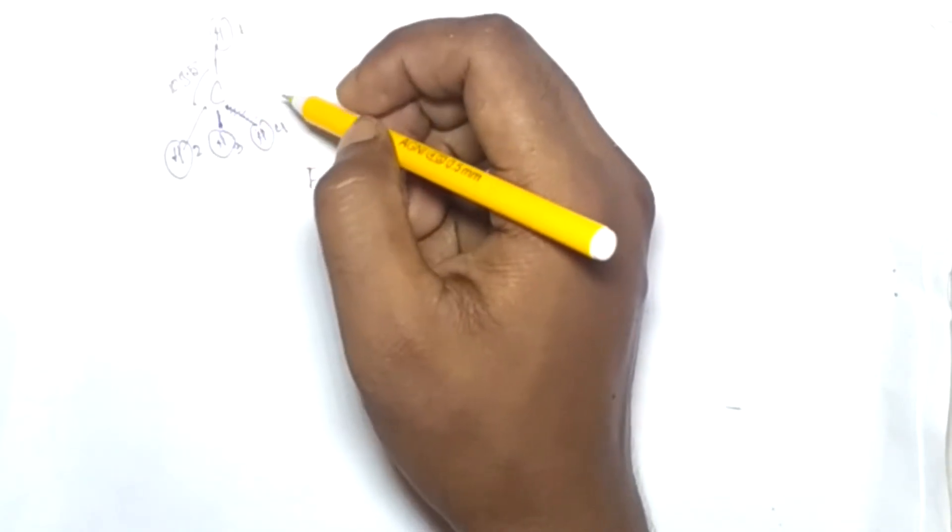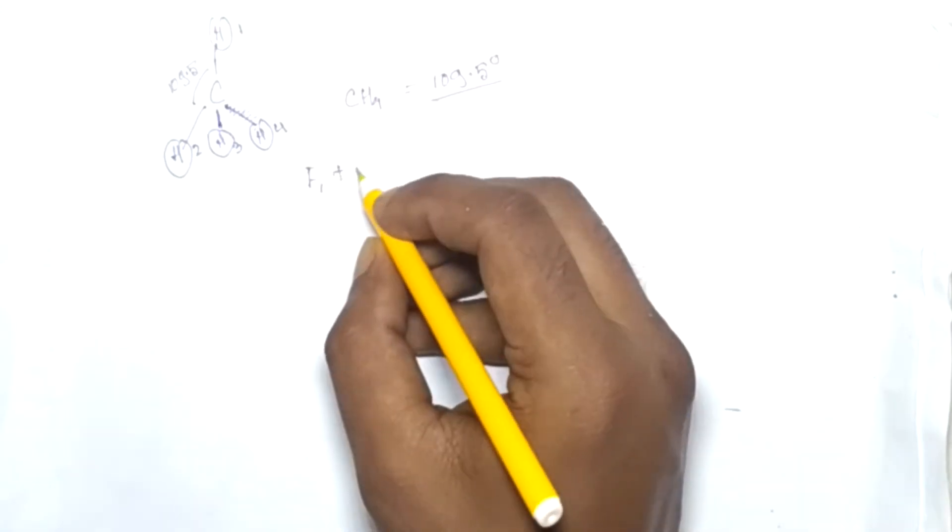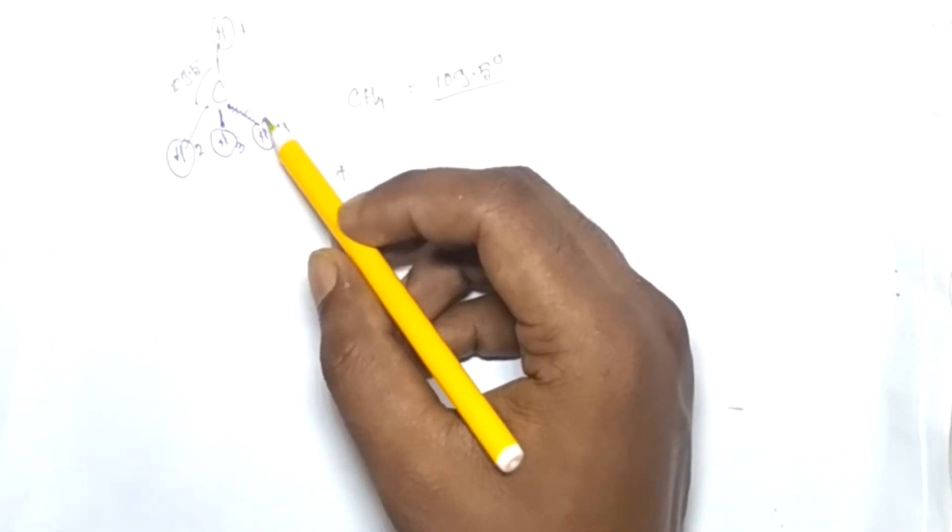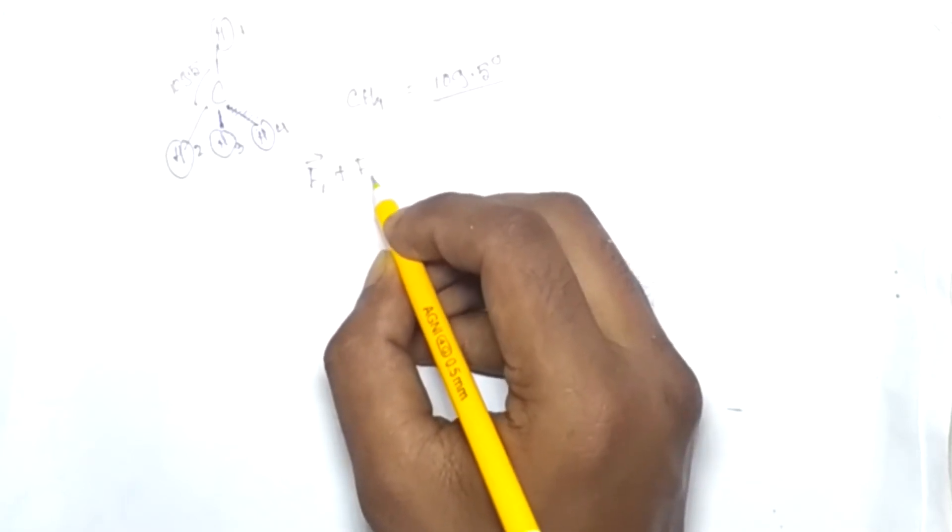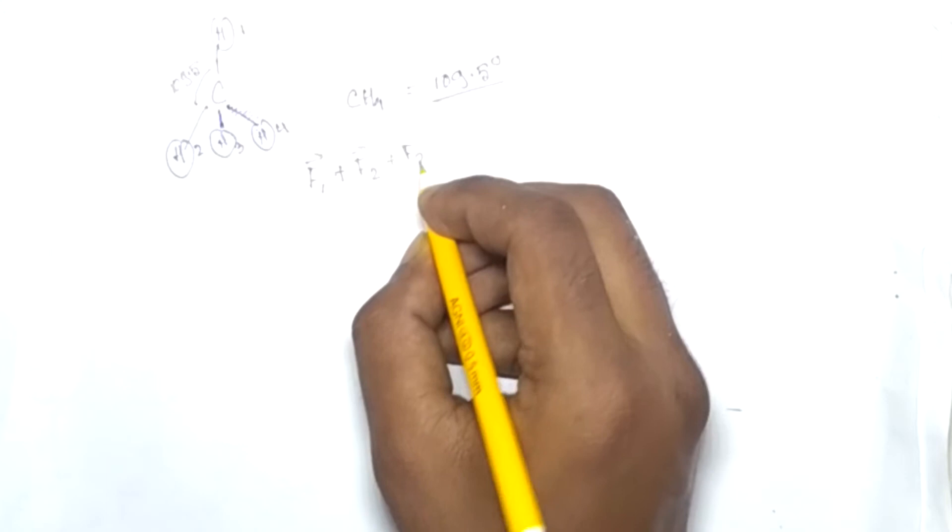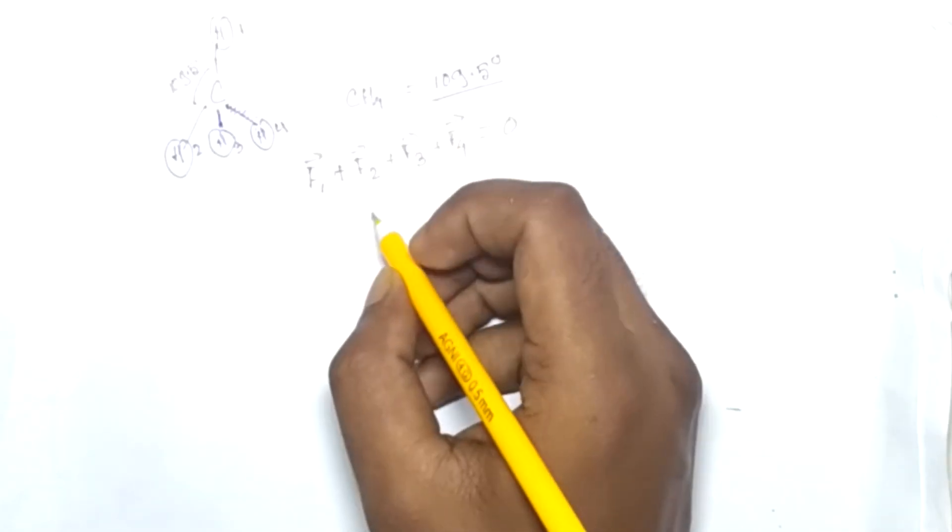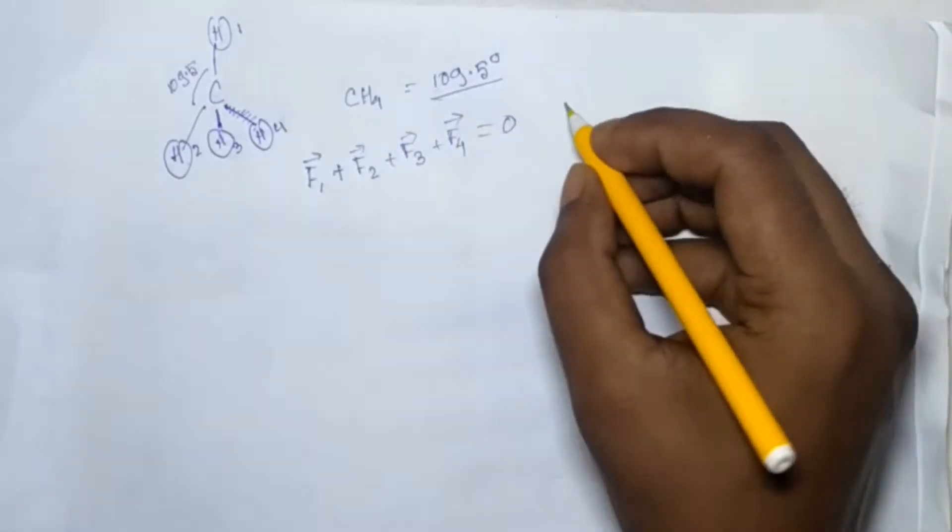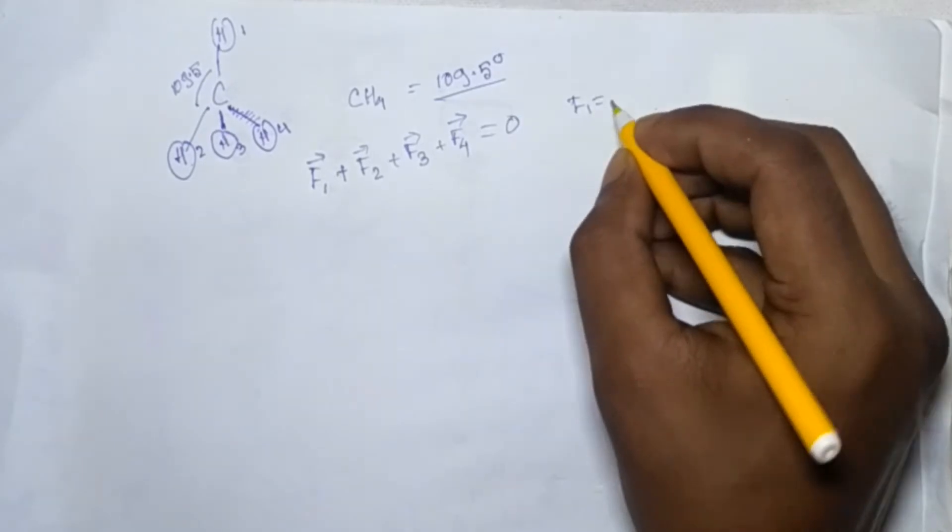So the carbon molecule is in the equilibrium for these forces. F1 + F2 + F3 + F4 equal to 0. Now from the symmetry you can say that the modulus of F1, F2, F3 equal to F4.